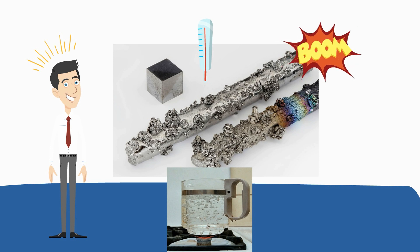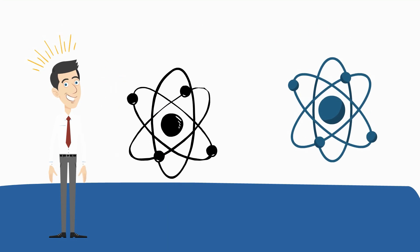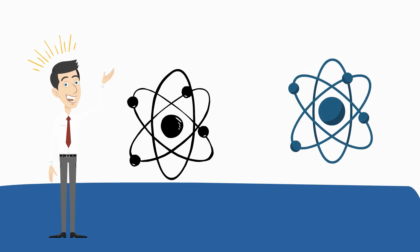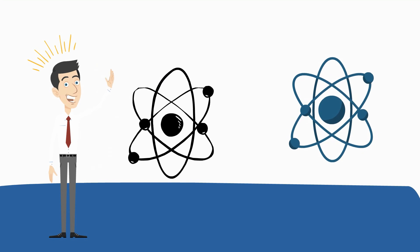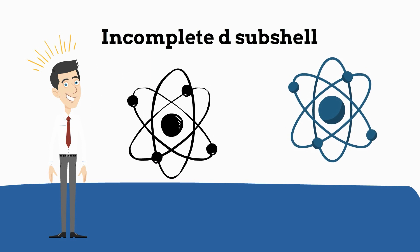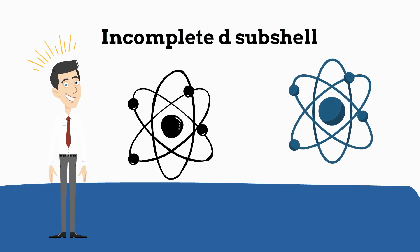Most transition metals have two electrons in their outer shell but some have one electron and palladium has 18, but they all have an incomplete D subshell. So there we go, the transition metals.